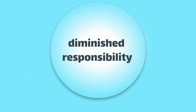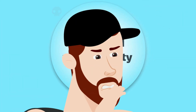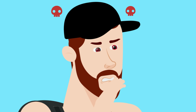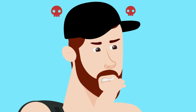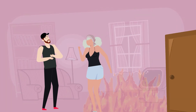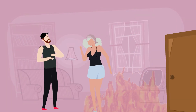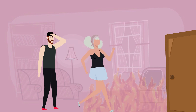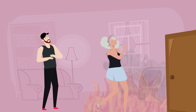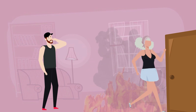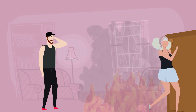Diminished responsibility applies if the offender suffers from a recognized medical condition affecting their mental functioning, like schizophrenia, significantly impacting the person's understanding or control of their actions, and directly contributing to the act of killing.